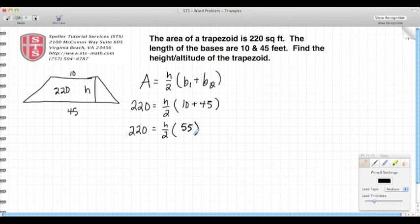And now I have two expressions set equal to each other. What I can do here is look at this as a proportion, so I put the 220 over 1, and now I can cross multiply. I'm going to multiply 1 times h times 55.